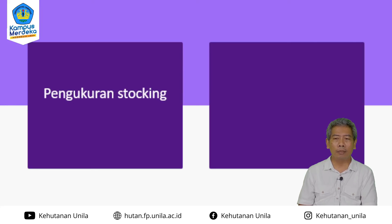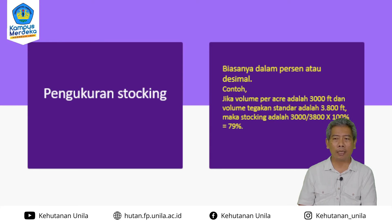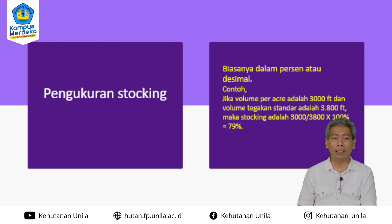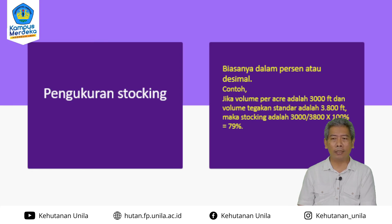Pengukuran stocking biasanya dinyatakan dalam persen. Contoh: jika volume per hektarnya 3.000 board feet dan volume tegakan standarnya adalah 3.800, maka stocking-nya adalah 3.000 dibagi 3.800 dikali 100%. Volume tegakan standar itu diukur menggunakan tabel hasil seperti tabel BVW. Kemudian volume per hektarnya adalah volume real yang dilihat di lapangan, apakah kurang, sama, atau berlebih.